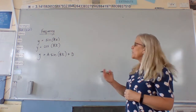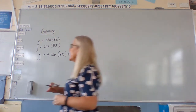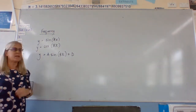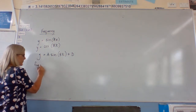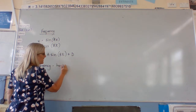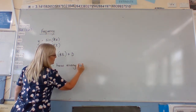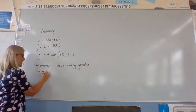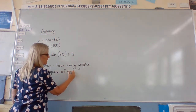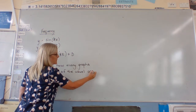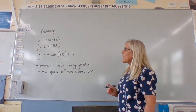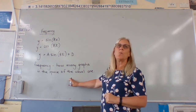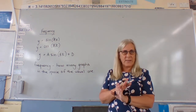The b value is going to affect how many waves there are in the space. The frequency is how many graphs or wraps there are in the space of the usual one. Along with frequency we get something called period, and the period is the length of one complete graph — from the start to when it repeats.